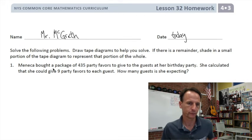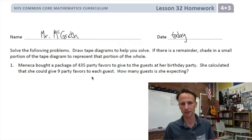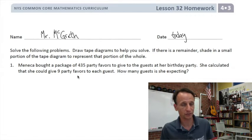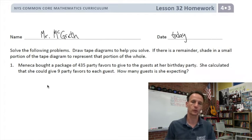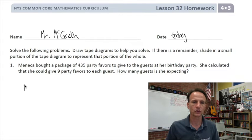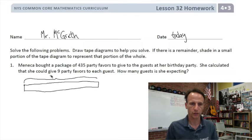Menica bought a package of 435 party favors to give to guests at her birthday party. She calculated that she could give nine party favors to each guest. How many guests is she expecting? We know how many party favors we have — 435.